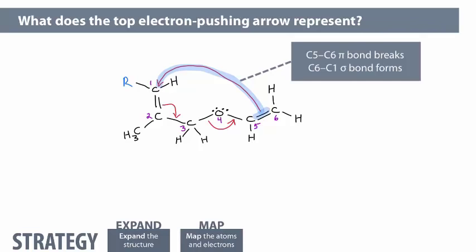In this section, you learned to draw the product of an intramolecular reaction, given the starting material and electron-pushing arrows. Next, you'll learn to draw the product of a reaction that involves a sigma-bond migration.